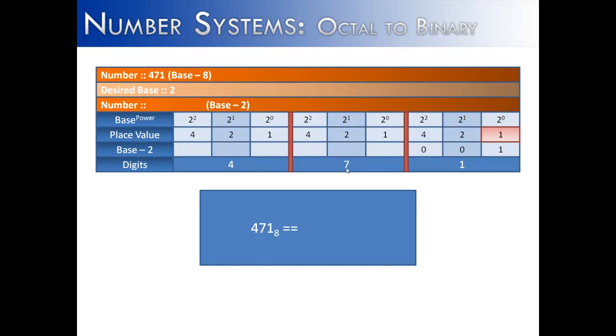When we go on to the next number, 7, we're going to say, what goes into 7? Well, 4 goes into 7, 2, and then 1. And so we use all of the digits, which makes sense because it's the highest number in the base. So 4 plus 2 plus 1 is 7.